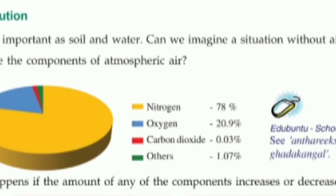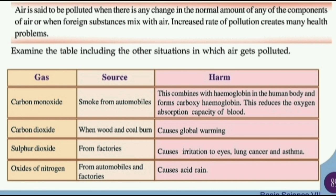The atmosphere is made up of nitrogen, oxygen, and carbon dioxide. We will now learn about carbon monoxide. Nitrogen is 78%, oxygen is 20.9%, carbon dioxide is 0.03%, and other gases are 1.07%.